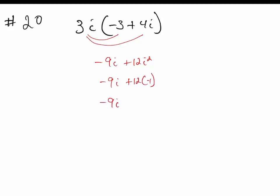We do have to rewrite it in the form of A plus B·i. So the final answer would be negative 12 minus 9i.